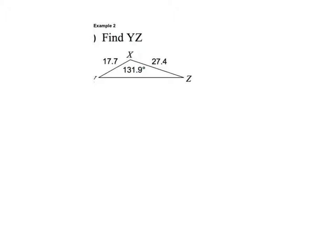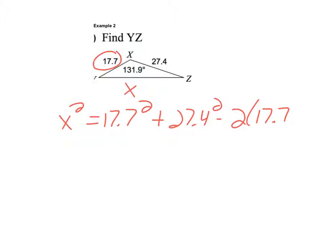All right, example two. So I'm looking for y z, which is little x. So normally angles are named with capital letters, variables, and sides will be lowercase. So I'm going to have x squared equals, it's my other two sides, so I'm going to have 17.7 squared plus 27.4 squared minus 2 times both of those sides multiplied together. And then cosine of 131.9, and I'm going to just substitute this in to my calculator.